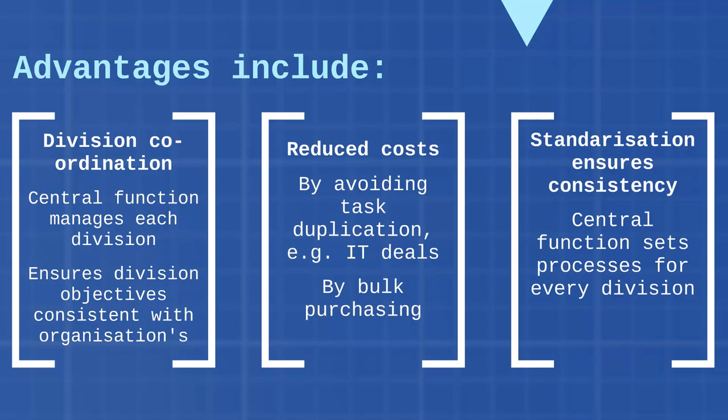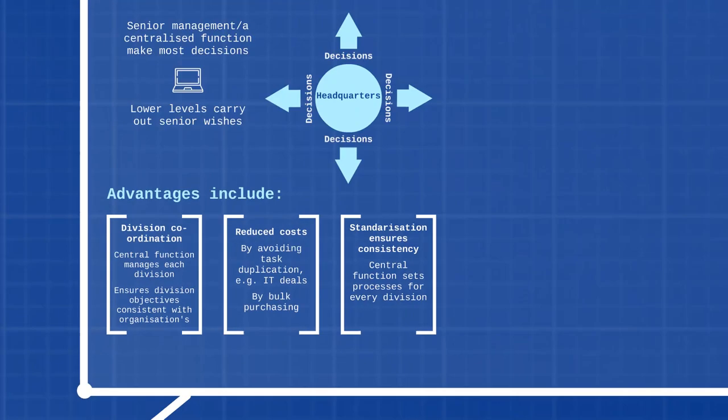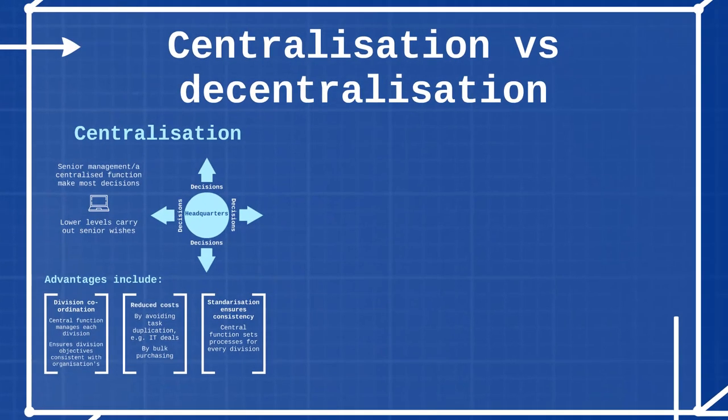The next advantage is that standardization ensures consistency of approach. By a central function making a decision and then feeding it throughout the organization, there will be a set way of doing something that is passed down to every division, so all divisions will be acting in the same way. That's centralization — what it is and its advantages.